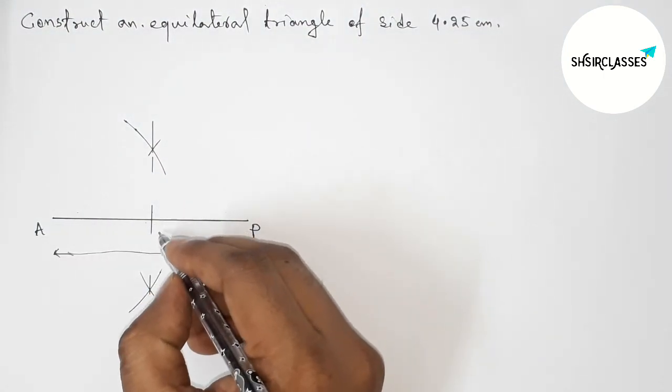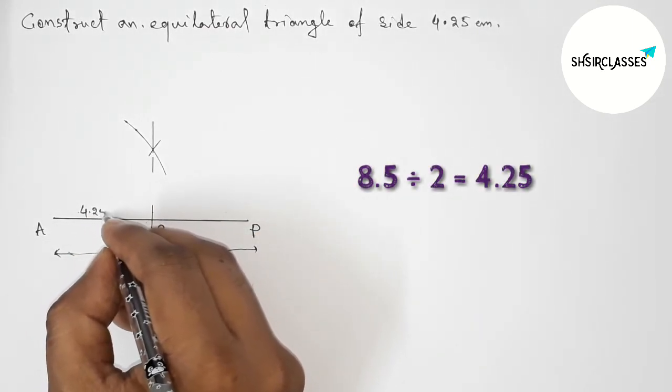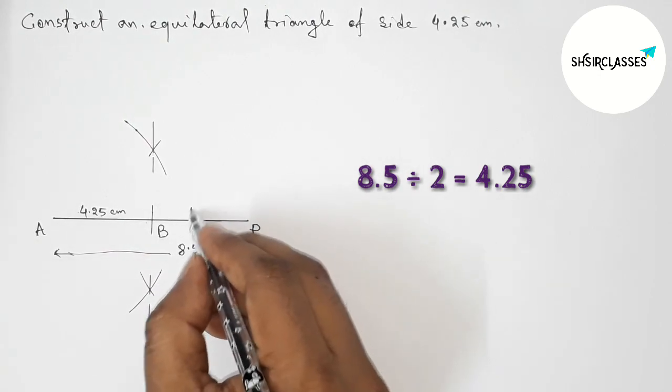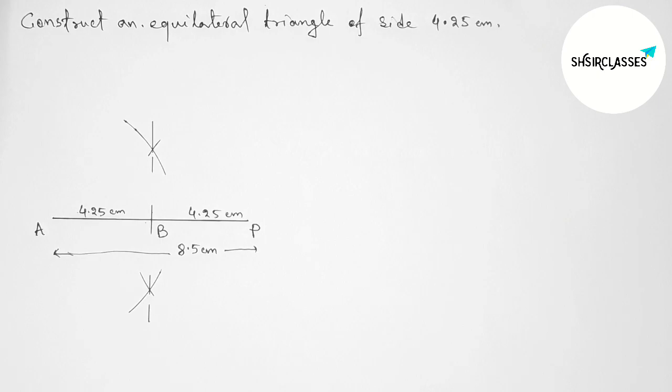Now taking here point B. So AB that is 4.25 centimeter, BP also 4.25 centimeter.